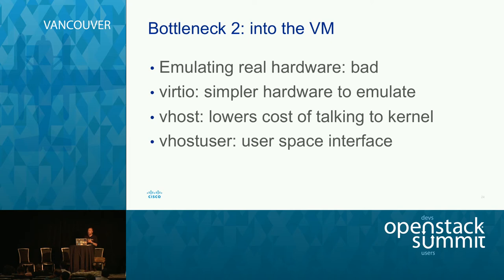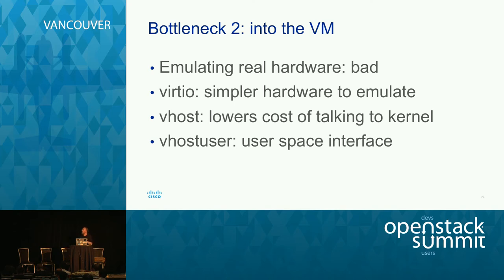We took that a step further with vhost, which gives a direct pipeline from the kernel to the virtual machine with fewer packet copies and fewer context switches. The latest thing — in QEMU 2.2, practically speaking — is vhost-user: an interface from user-space processes to VMs. It appears as a standard virtio interface to the VM, but you're moving packets very quickly from another process, such as a DPDK data plane, directly into the virtual machine.